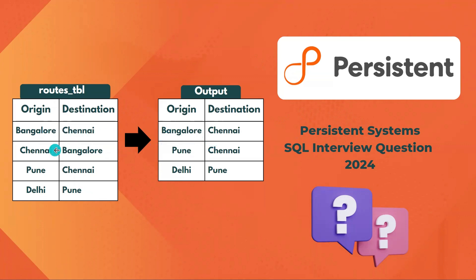Bangalore-Chennai and Chennai-Bangalore are a kind of duplicate, so from this combination we need to get only one record. Other records like Pune-Chennai and Delhi-Pune are different combinations only, so those records as-is will come in the output. Let's see how we can solve this.